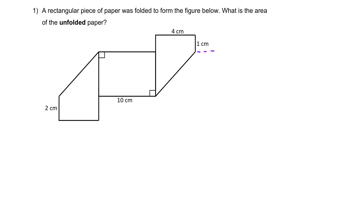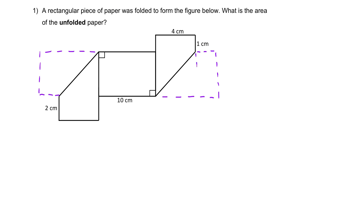When we unfold it, it should look like this — although it's not really drawn to scale, you should get the idea. When I unfold this segment, it comes down here. And for this segment, when unfolded it should be represented by the dotted line. The next step is to find out the dimensions of the dotted lines, so let's further partition it.